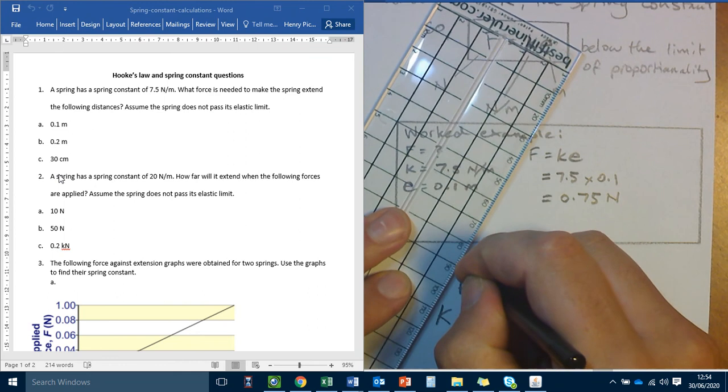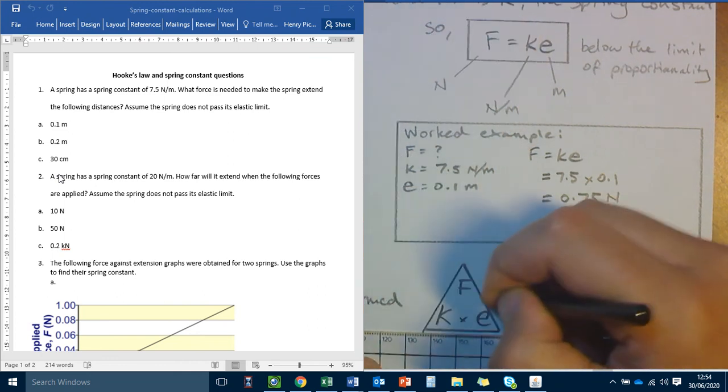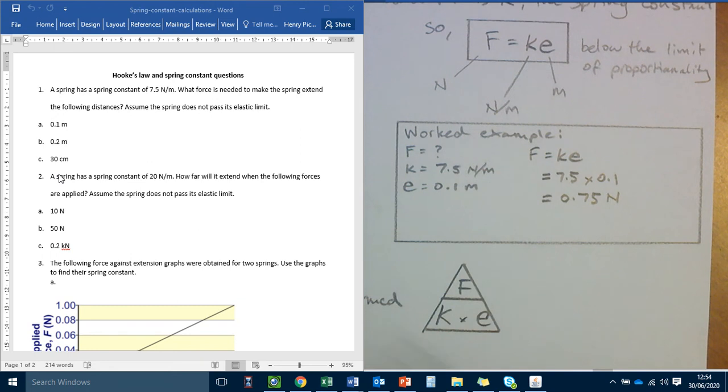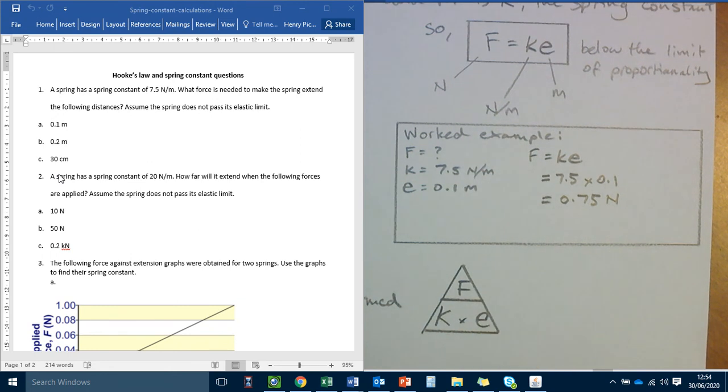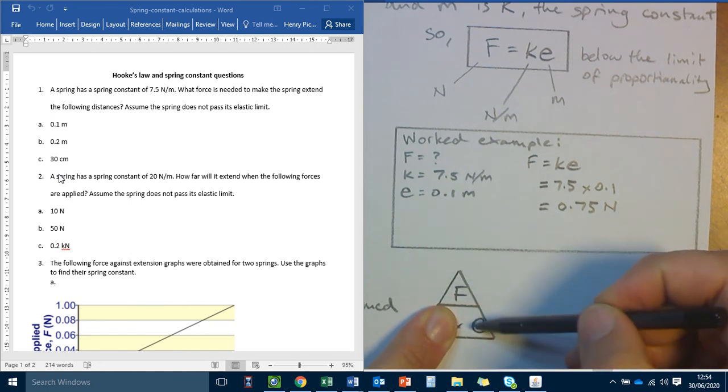And we can use this triangle as a reminder if we get stuck with the algebra. So if we're looking for extension, cover extension, and we've got F divided by K. If we're looking for K, cover the K. We've got K equals F divided by E.